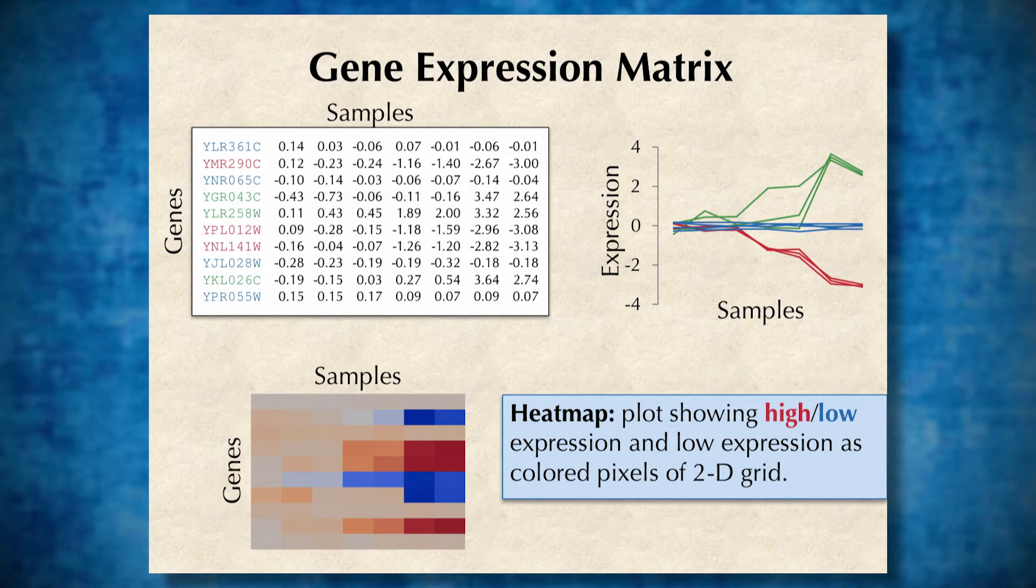A gene expression heat map is basically the same as the gene expression matrix, except instead of numerical values, we're color coding the expression values. In this plot, red shows high expression and blue shows low expression.